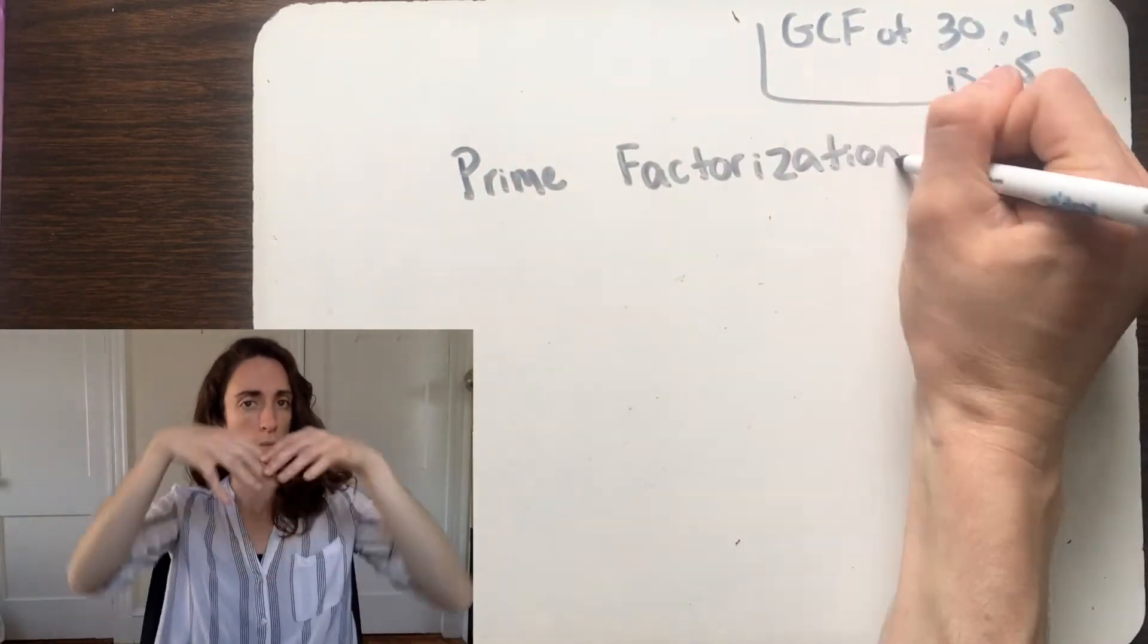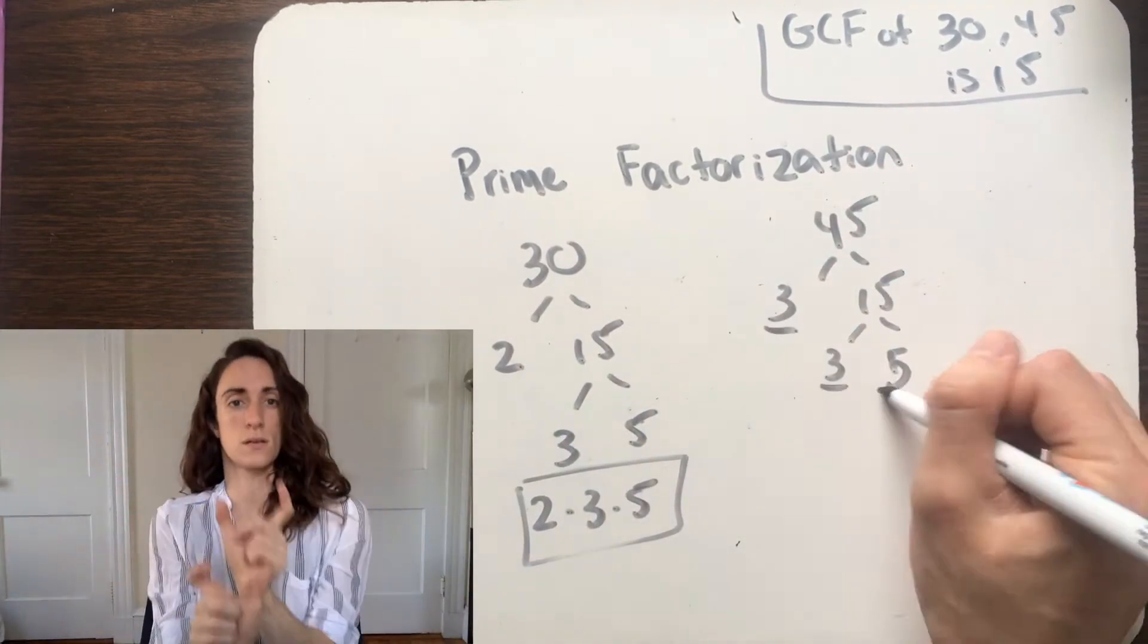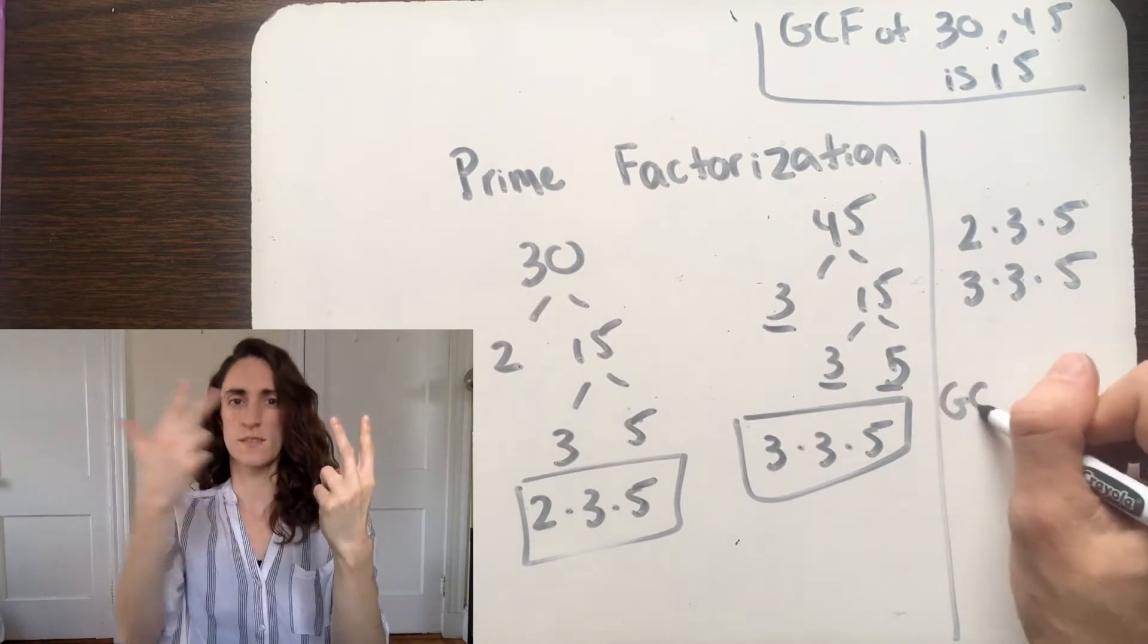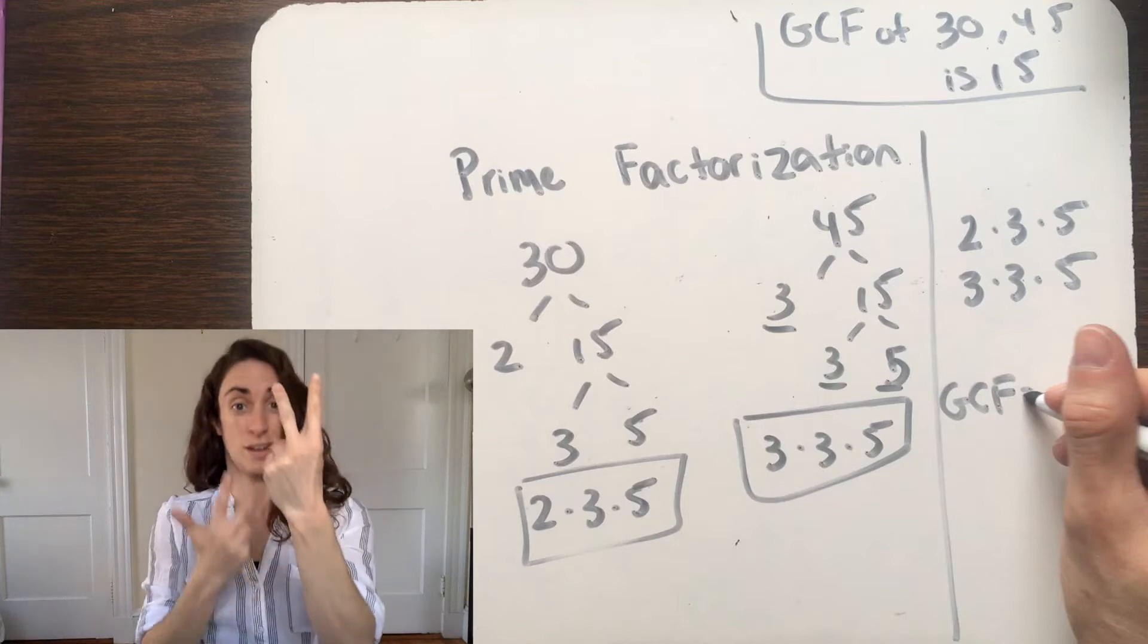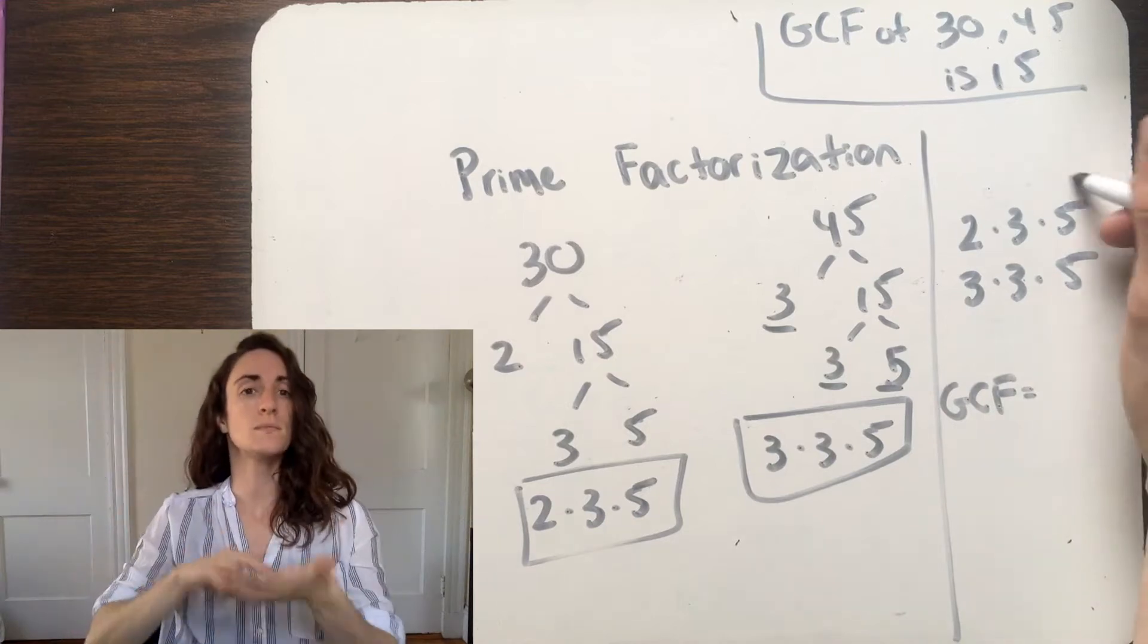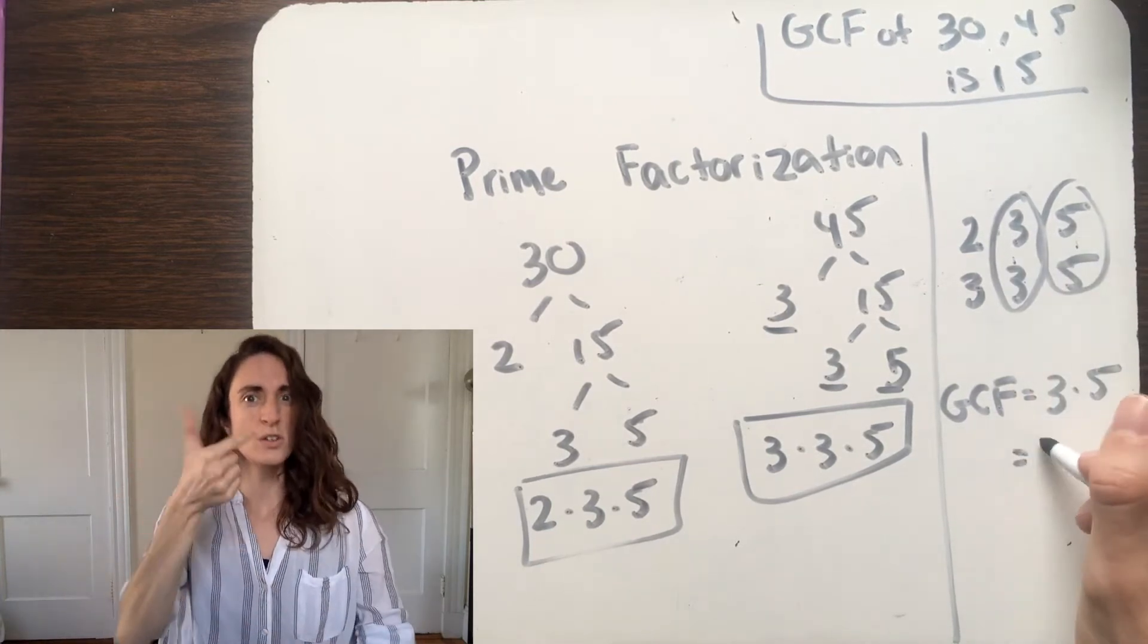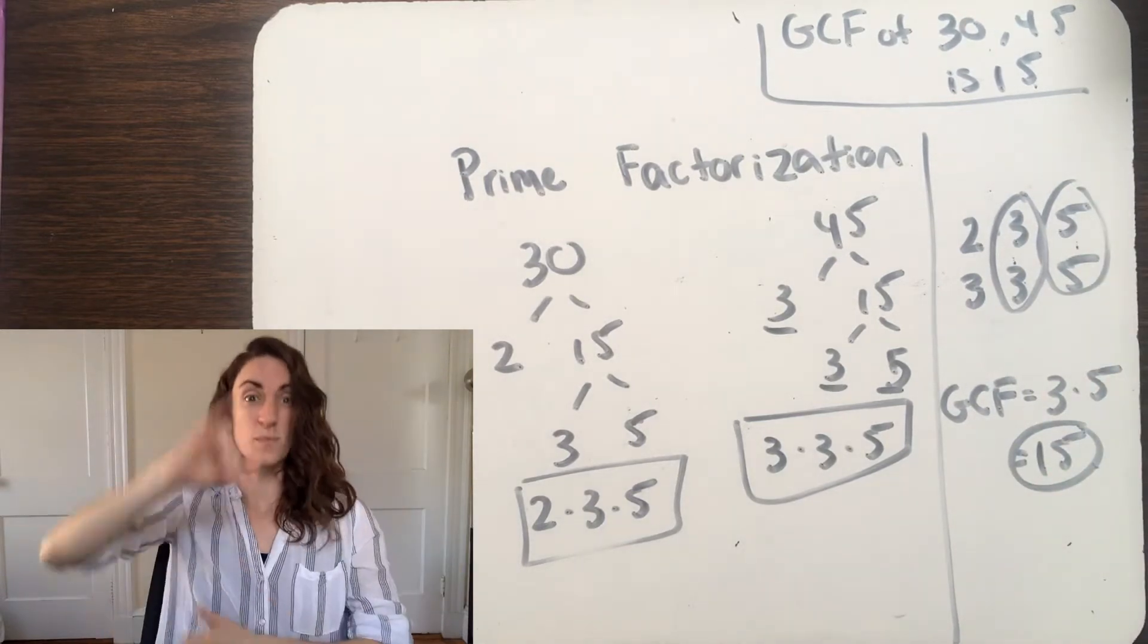Now let's see what happens if we find the prime factorizations of 30 and 45, and compare them. Let's compare these prime factorizations, 2 times 3 times 5, and 3 times 3 times 5, and see what both of them have. They don't both have a 2. They do both have a single 3, and although one then has a second 3, the other does not, so that's not shared, and they do both have a 5. So the shared elements of their prime factorizations are 3 and 5. And you'll notice that the product of 3 and 5 is 15, which we already found to be the greatest common factor of 30 and 45.